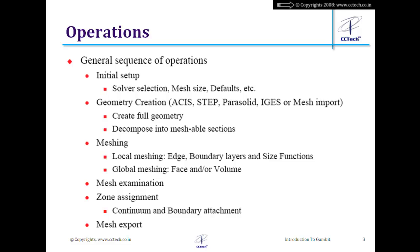Once the initial setup is done, create the full geometry using either GAMBIT's built-in capabilities or the import facility. The next step, since we are most often interested in hexahedral mesh, is to decompose the geometry in a way that meshing algorithms like map, submap, or cooper will be successful. So the second step after finalizing geometry is decomposing it into meshable sections.